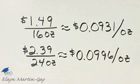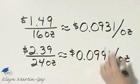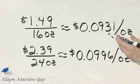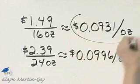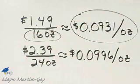But once we have it as a unit price, we can compare the unit prices. Which number is smaller? This number is smaller, so this is cheaper. It means the 16-ounce size is actually the better buy.